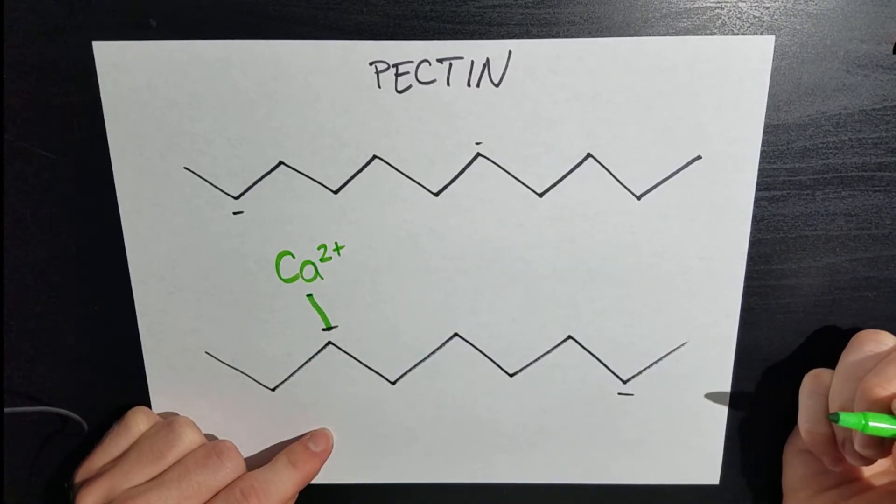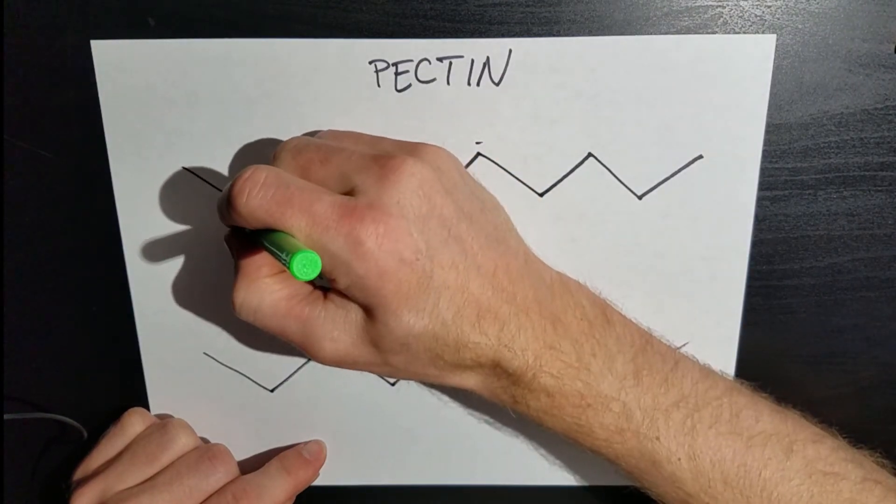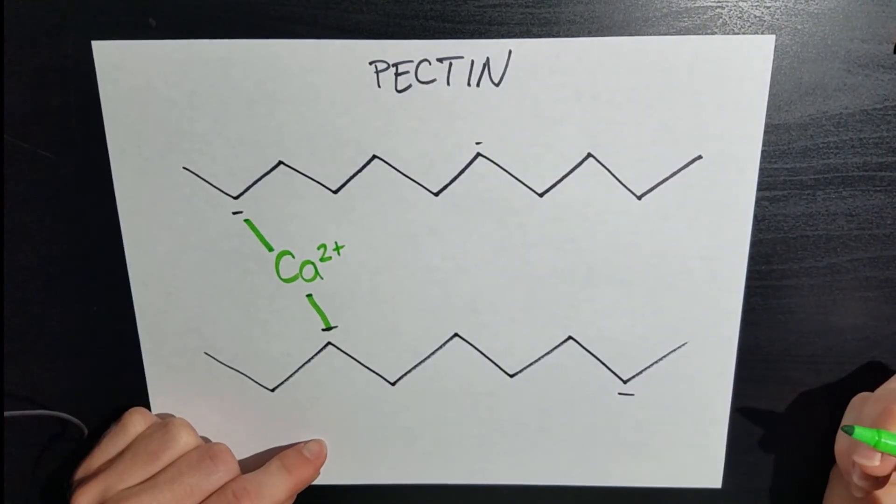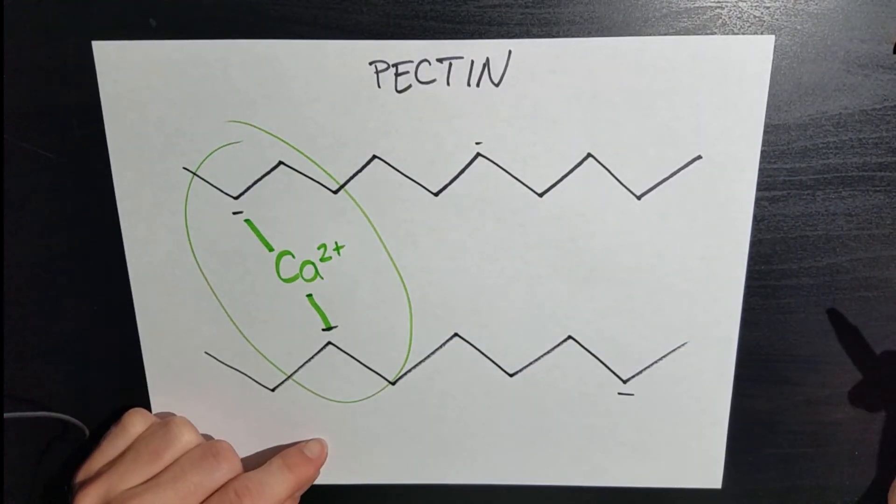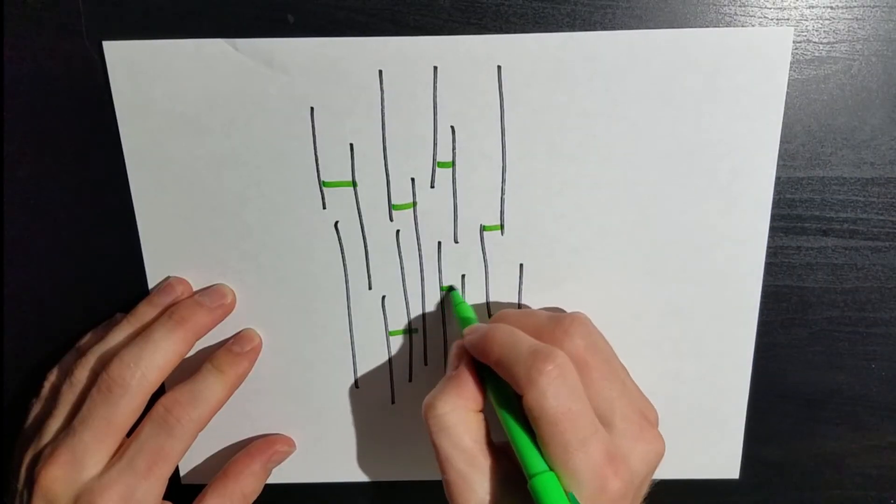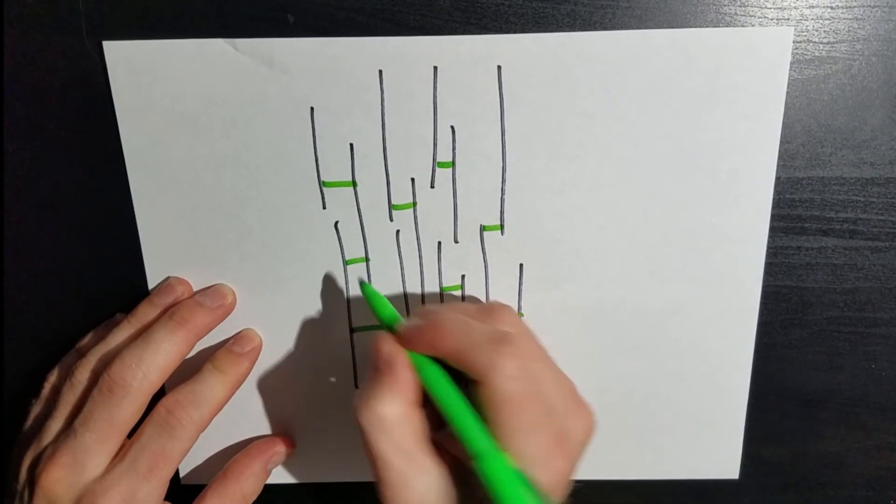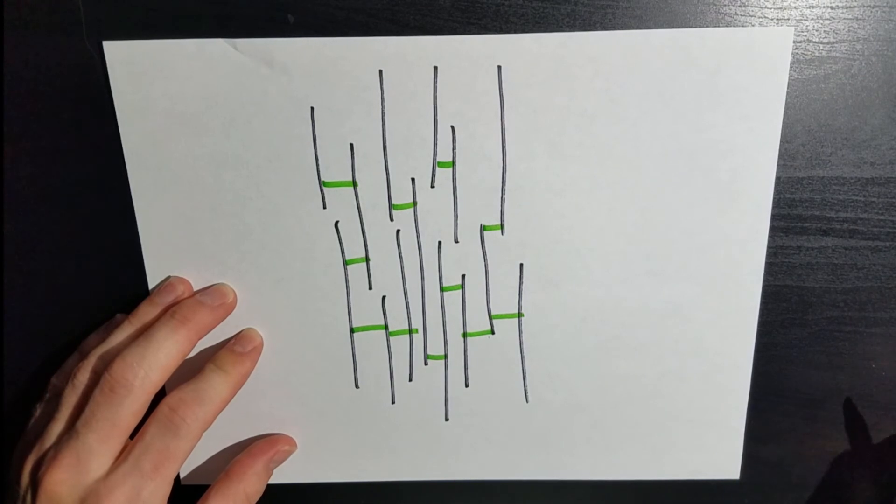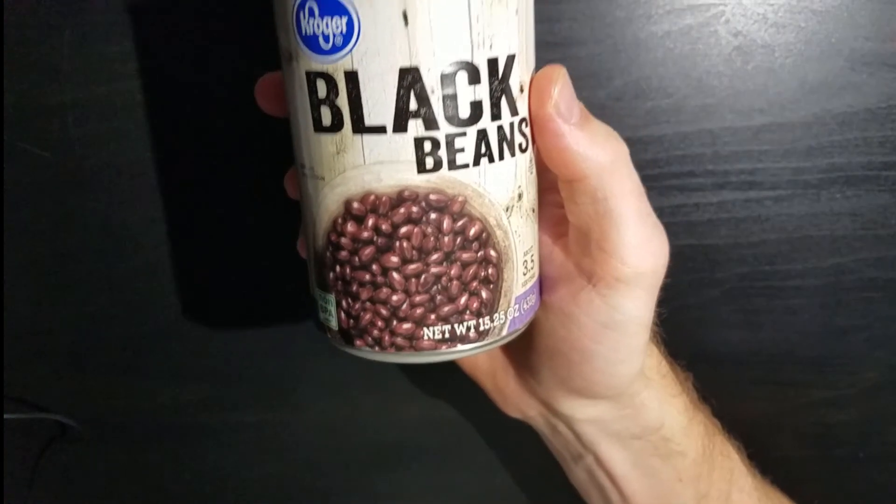And this thing, this whole thing is called a calcium bridge, and it helps lash together these long fiber molecules of pectin so that the whole structure can be firmer. So the reason you have it in these black beans is so that your beans aren't mushy, but that they're actually firm and they have some bite and some chew to them.